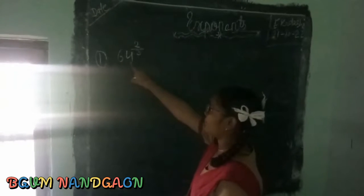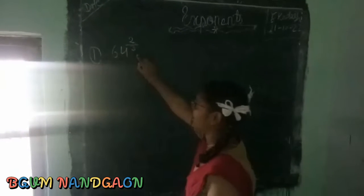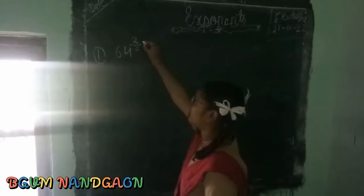We will take an example, 64 to the power 2 over 3. So 3 is our denominator and 2 is our numerator.